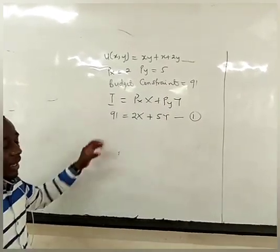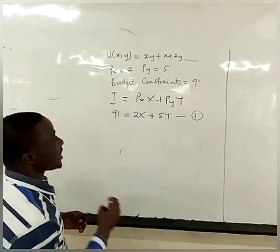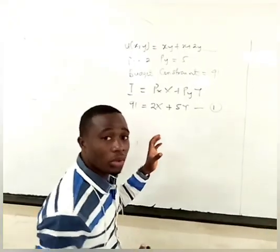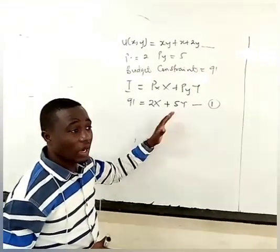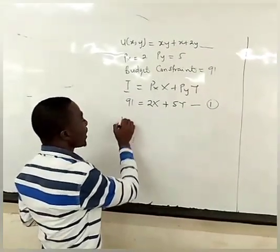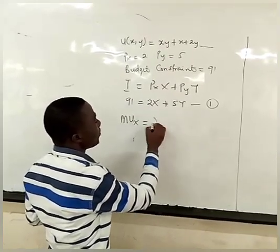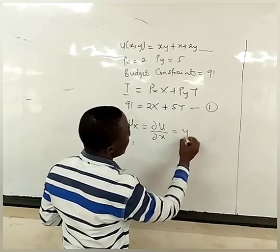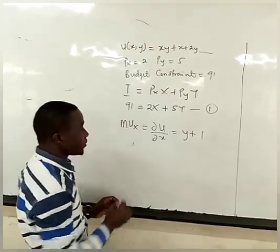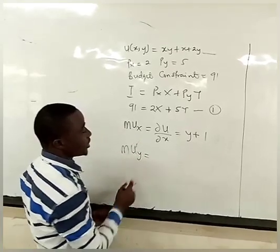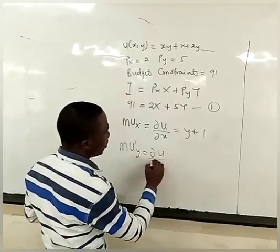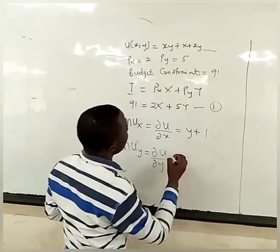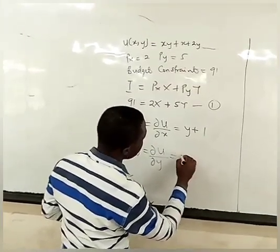Our second focus is to go to our utility function and use what we call the equimarginal principle to get our second equation. So we are going to find the marginal utility of x, which is given by the partial differential of the utility function with respect to x, and when we do that we are going to have y plus 1. Then we find the marginal utility of y, which is given by the partial differential of the utility function with respect to y, and we are going to have x plus 2.